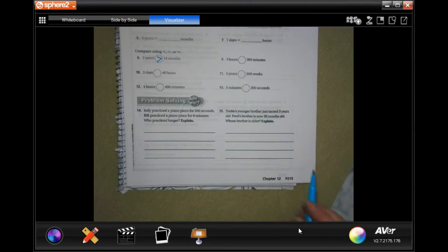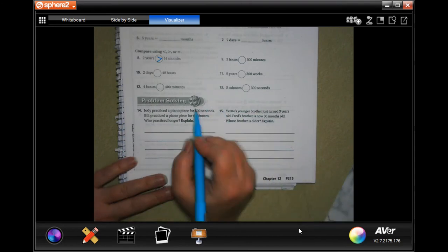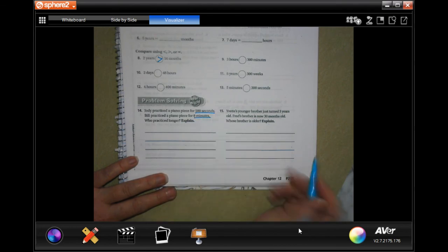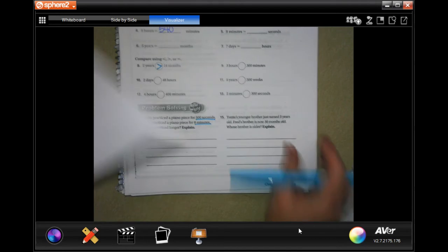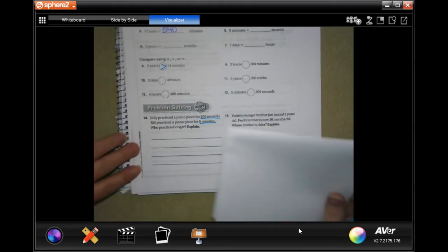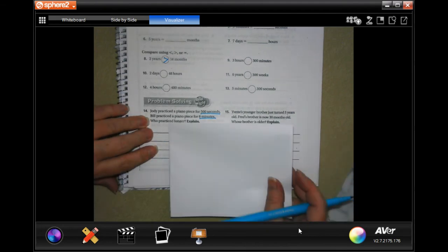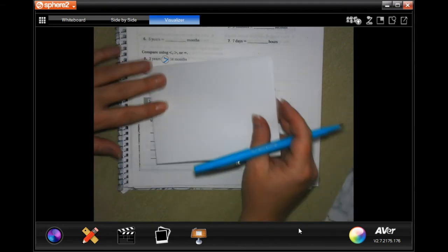Jody practiced a piano piece for 500 seconds, Bill practiced a piano piece for eight minutes. Who practiced longer? Let's grab our scrap paper and we're going to turn them both into seconds, because otherwise you have to divide. Much easier to multiply. We're going to turn eight minutes into seconds.